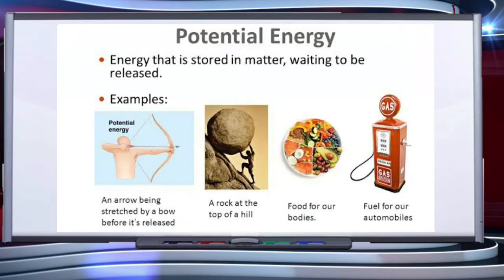Let's understand potential energy. The energy possessed by a body due to its change in position or shape is called potential energy. A stressed or compressed spring has potential energy due to change in its size. A stressed bow has potential energy due to change in its configuration, as shown in this slide. The stored potential energy of a bow is used to supply kinetic energy to the arrow, and as a result, the arrow has a large range.